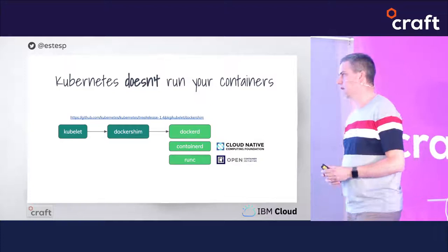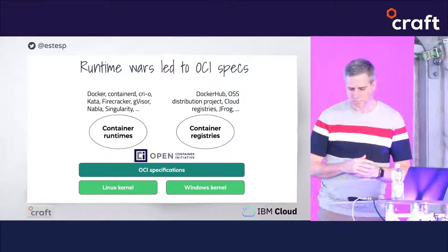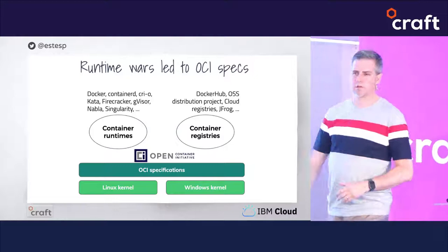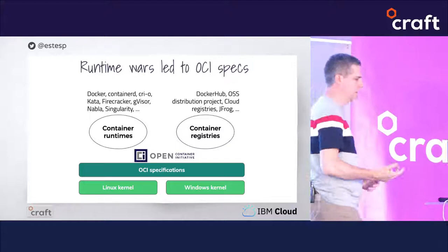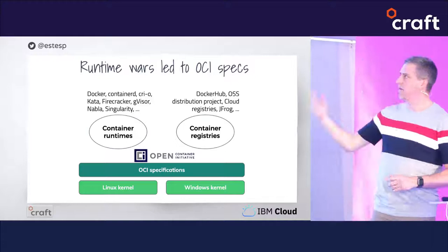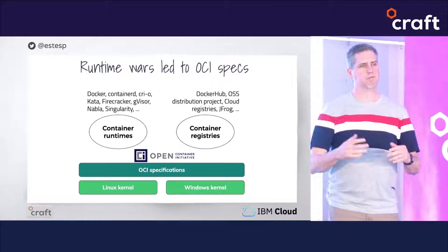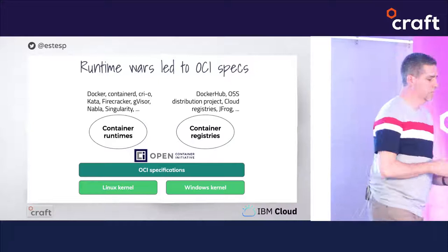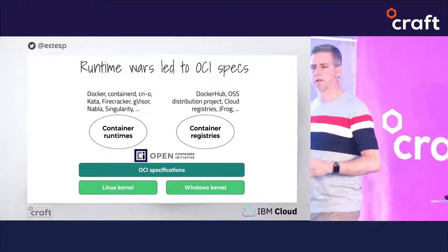An interesting thing happened along the way. It's kind of silly to call it the runtime wars — if you weren't involved, you probably didn't even know there were detractors from Docker and their direction. There were people with different ideas about container runtimes, people who felt maybe Docker shouldn't be the arbiter of where containers went in the future. But out of that, we got the Open Container Initiative — a vendor-neutral foundation under which we could all agree on a couple of things: what is a container, what is a container image, and most recently, how do we talk to a registry and pull or push images. All three of those areas have now been standardized under the OCI.